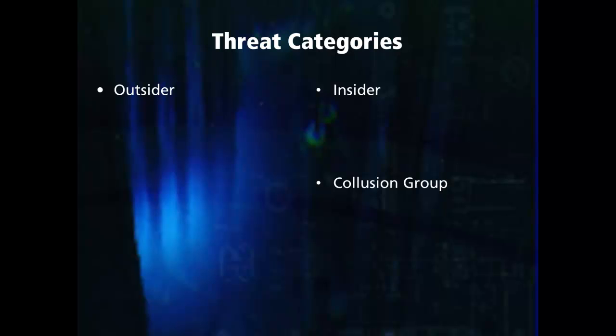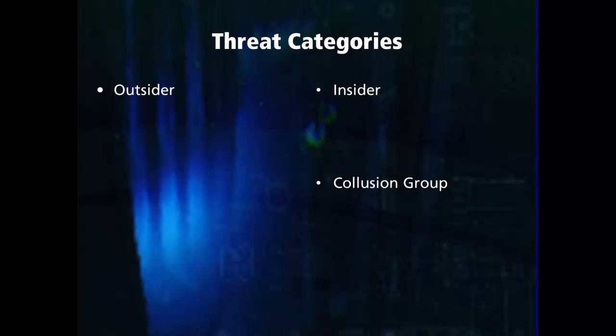The categories of potential threats can be divided into outsiders, insiders, and collusion groups. Outsiders may be terrorists, criminals, protesters, vandals, spies, or psychotics.